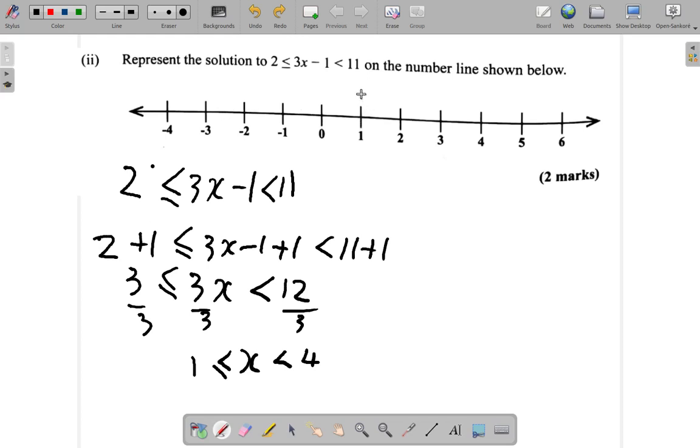Now, this is 1 is less than or equal to x. What that means, I will highlight the 1 here with a circle and shade the circle to show that 1 is included because it says not only is x less than, it is equal to 1. So, 1 is in it.